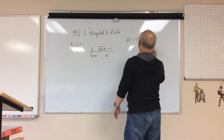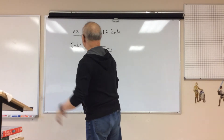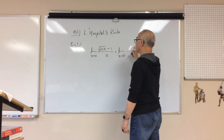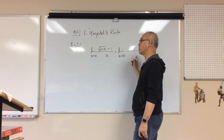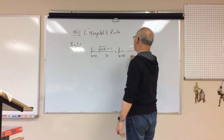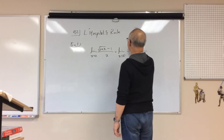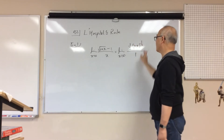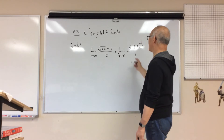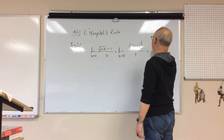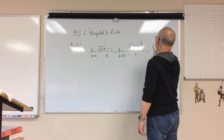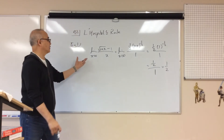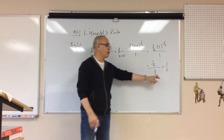So what we're going to do is take the derivative of both the top and the bottom separately — that is L'Hopital's rule. The derivative of the bottom is 1. The derivative of the top is (1/2)(1+x)^(−1/2). Now putting x = 0, I get (1/2)(1)^(−1/2) over 1, which is 1/2 over 1 = 1/2. So the limit is 1/2.